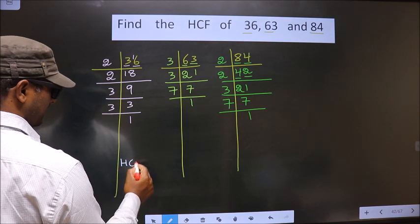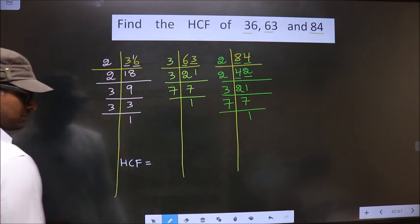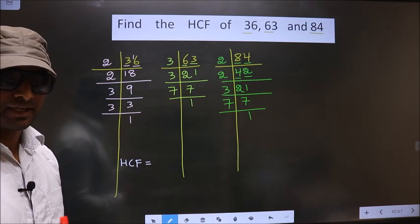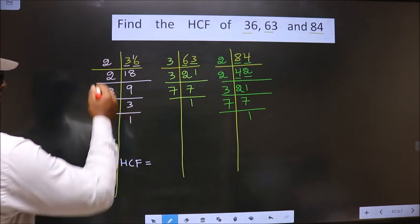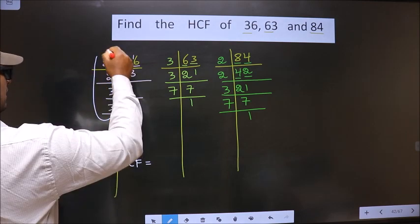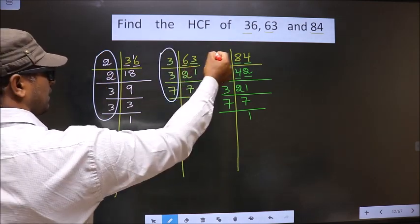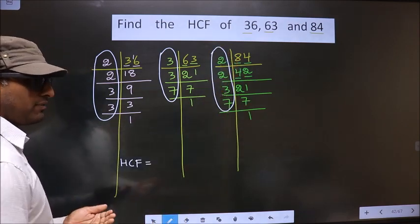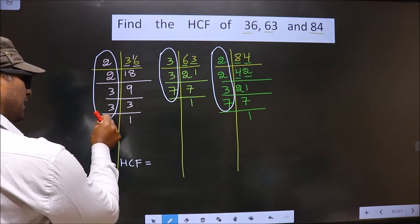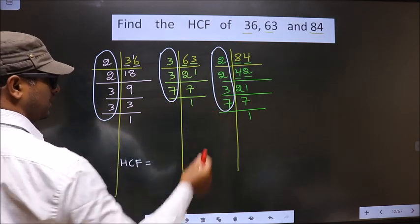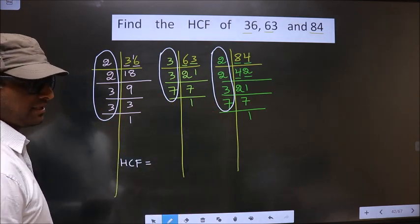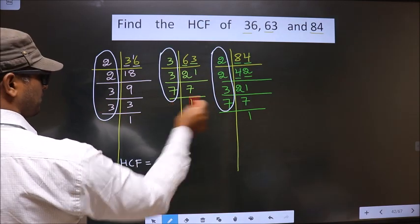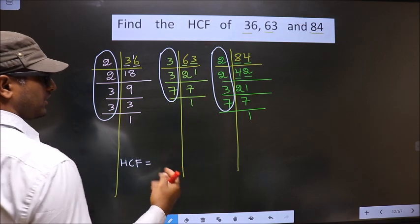So now our HCF is the product of numbers that are present in all three factorizations. We should find the numbers that are present in all three places.